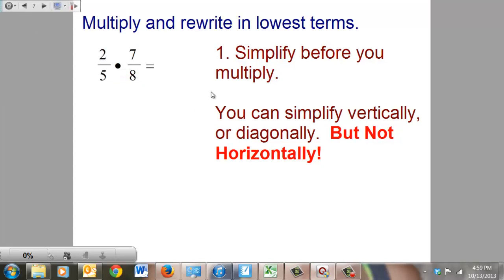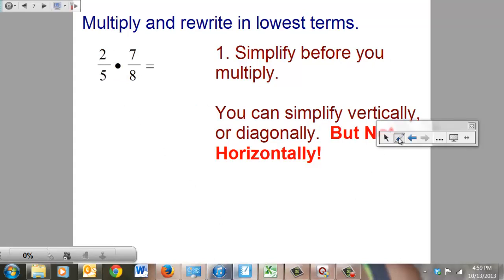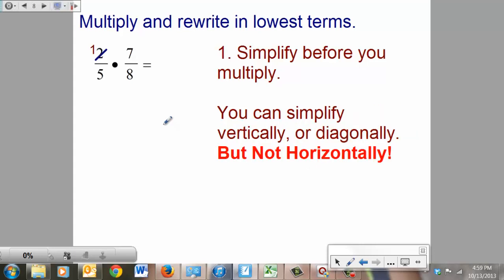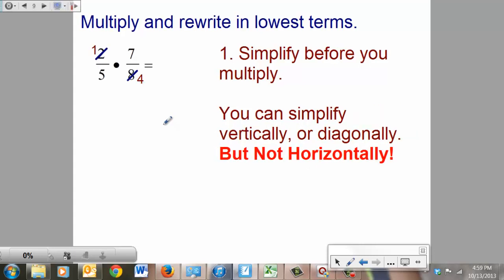When you look at this, you say, will 2 and 5 simplify? No, they will not. Will 7 and 8 simplify? No, they will not. How about 2 and 8? Yes, they will. 2 goes into 2 once. 2 goes into 8 four times.